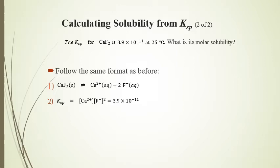Let's put this into practice. We'll solve for the molar solubility of CaF2, where Ksp equals 3.9 × 10⁻¹¹. Whatever the value of X is for calcium fluoride, it's X for Ca²⁺ and 2X for the fluoride ion F⁻. Setting up the expression: X times (2X)² equals 3.9 × 10⁻¹¹, which equals 4X³ equals 3.9 × 10⁻¹¹.